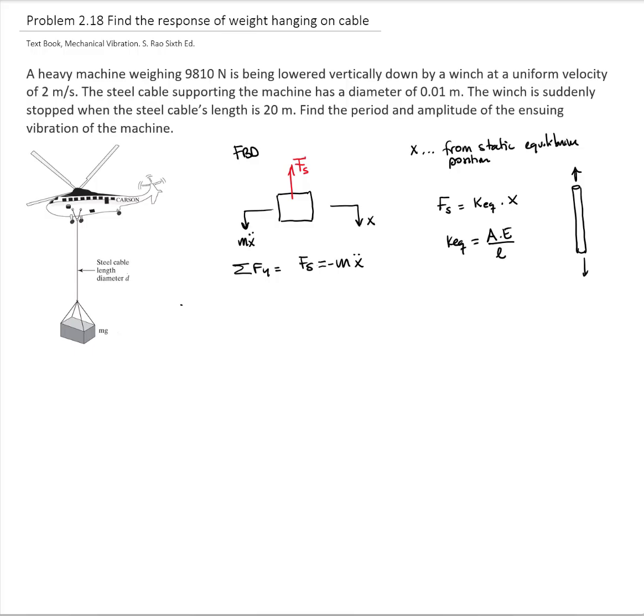They tell us that the cable is made of steel, and we know that the properties of steel give a Young's modulus of 207 gigapascals. We are given the diameter, which is 0.01 meter, and we are given the length, which is 20 meters.